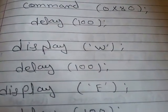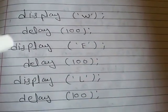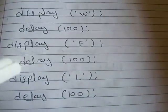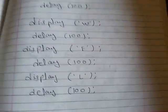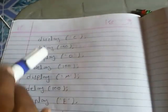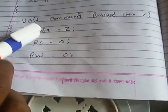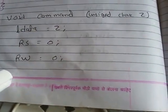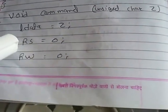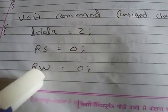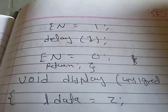To write 'WELCOME' on the LCD, we display each character one by one with a delay: W, then delay, E, then delay, L, then delay, C, O, M, E. After the main function, we define the void command function. An unsigned character Z is passed as data. The RS and RW pins are set to 0 because we are writing a command. The enable pin is toggled with a high-to-low pulse with delay.